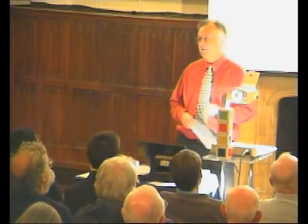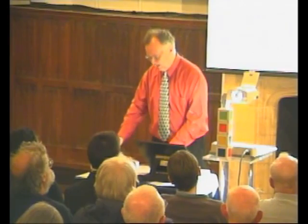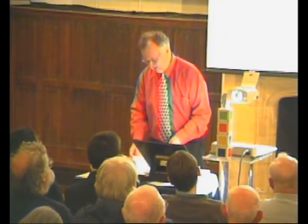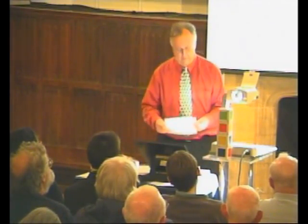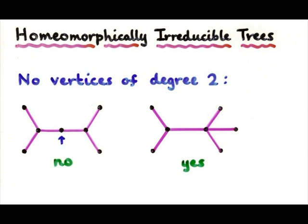Well, I taught a graph theory course, and when I came to trees, let me tell you what these things are. It's just a tree structure like this, so you haven't got any cycles. And you don't allow any point with exactly two lines out of it — any point has either got more than two (this has got three, this has got four), or it's an endpoint, which means it's only got one. You don't allow any twos.